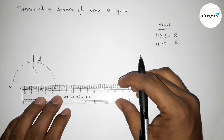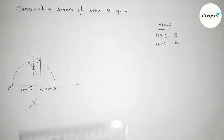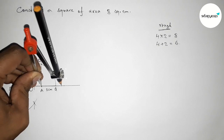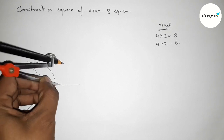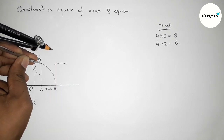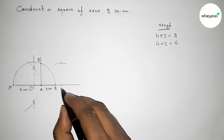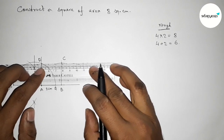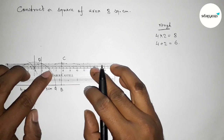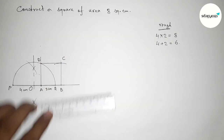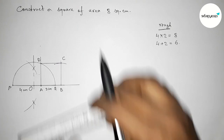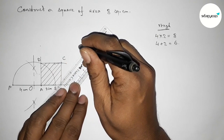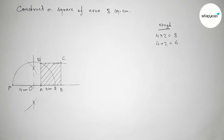Now extending the line PQ. Taking the length AQ and putting the compass on point A and cutting here, then with the same length drawing an arc. Now putting the compass on point D and cutting here. Taking point B and point C. Joining side BC then joining side CD to get square ABCD. Drawing some lines to mark the required square ABCD. So this is our required square ABCD of area 8 square centimeter.